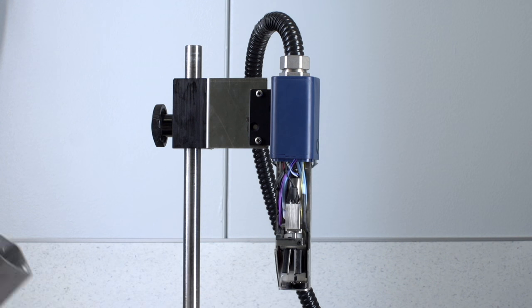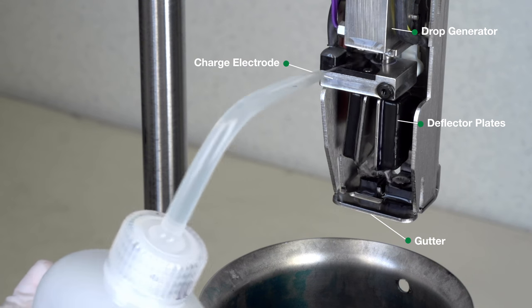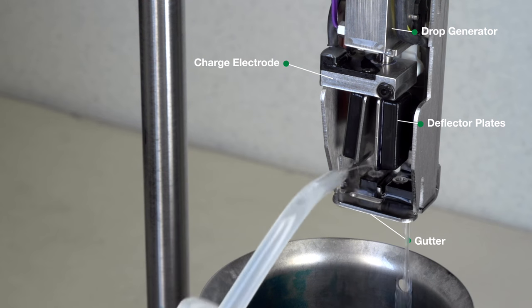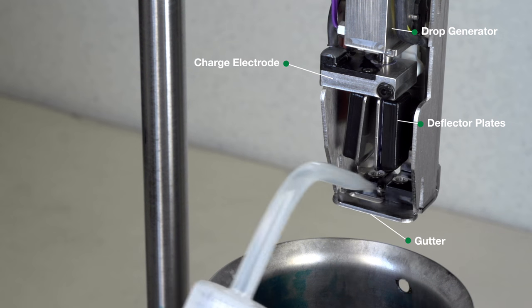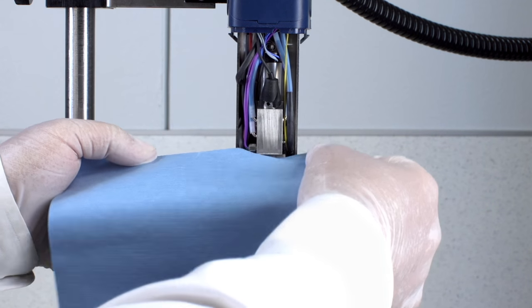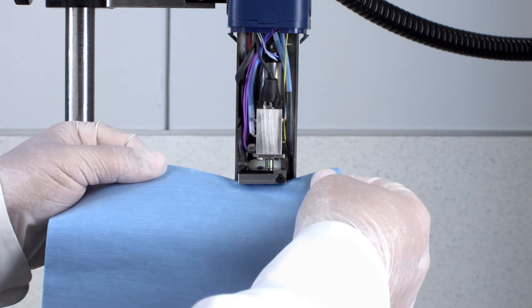With the holster removed and using an appropriate wash, clean the printhead from the drop generator down, cleaning the charge electrode, deflector plates, and thoroughly cleaning the gutter. Using a lint-free wipe, gently dry all of the components from the drop generator to the gutter.